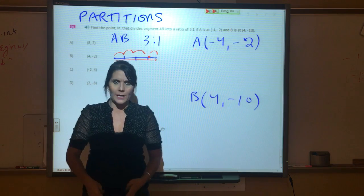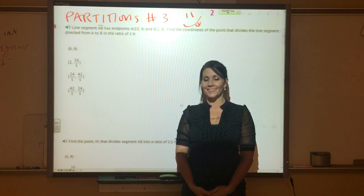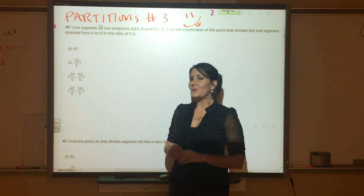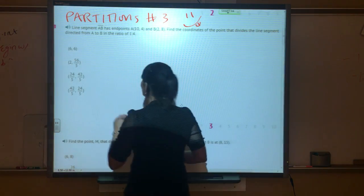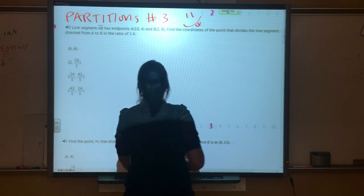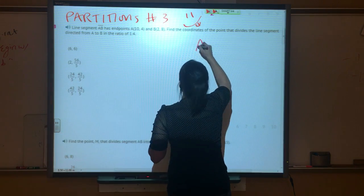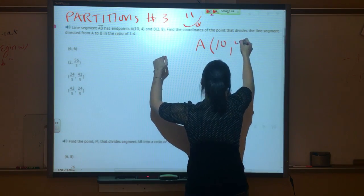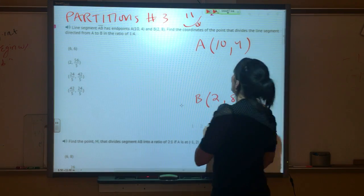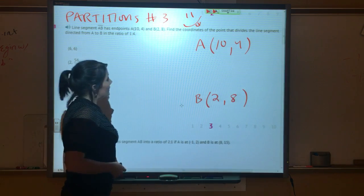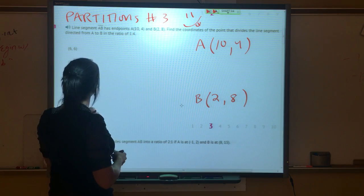All right, we're gonna do one final problem involving partitions. This problem is telling us that segment AB has endpoints A at (10, 4) and B is at (2, 8). It's asking us to find the coordinates of the point that divides the line segment.